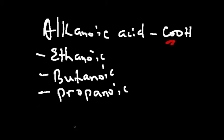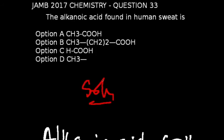Examples of alkanoic acids are the ethanoic acid, the butanoic acid and the propanoic acid. But the alkanoic acid that is found in the human sweat is the propanoic acid. So if we go back to our options, the correct answer here is option B.